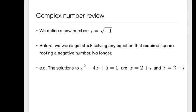So x squared minus four x plus five equals zero. Before we introduced i, we were stuck. We couldn't solve it. Now we get two roots, two plus i and two minus i.